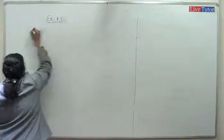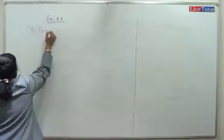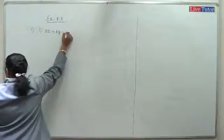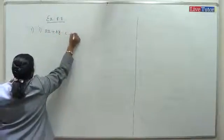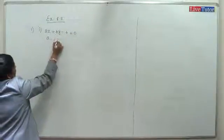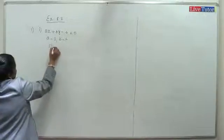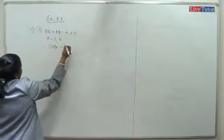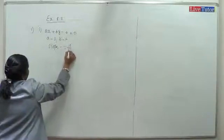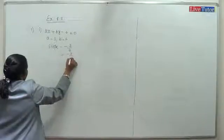For Exercise 5.5 question 1: a equals 3, b equals 4. Therefore slope equals minus a by b, which equals minus 3 by 4.